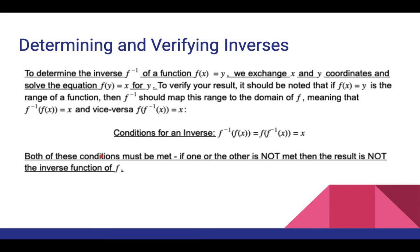To determine the inverse of a function f of x equals y, we exchange x and y coordinates and solve the equation f of y equals x for y. To verify your result, applying the inverse to the original function should give you x, and applying the original function to the inverse should also give you x. Both conditions must be met: f inverse of f of x equals x, and f of f inverse of x equals x. If one or the other is not met, the result is not the inverse function of f.